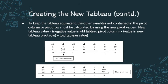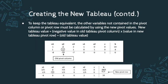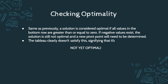Now we go back and check for optimality again. The solution is considered optimal if all values in the bottom row are greater than or equal to zero. Looking at the tableau we just created, we still have values less than zero, which means this is not yet the most optimal tableau. So we need to identify a new pivot variable and create a new tableau, iterating until we reach optimality.